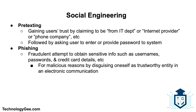The first example is pretexting — gaining a user's trust by claiming to be from the IT department, internet provider, or phone company, followed by asking the user to enter or provide a password so the supposed tech can make changes to the system. The next one is phishing — the fraudulent attempt to obtain sensitive information such as usernames, passwords, and credit card details, often for malicious reasons, by disguising oneself as a trustworthy entity in an electronic communication.